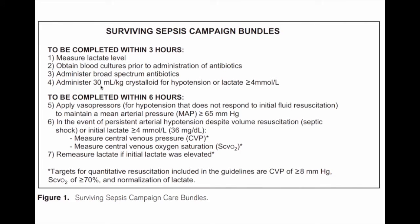The bundle within six hours is to apply vasopressors appropriately, and in the event of persistent arterial hypotension, to measure a central venous pressure and a central venous oxygen saturation with targets shown here, and to remeasure a lactate if the initial lactate was elevated.